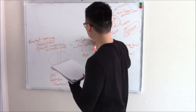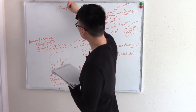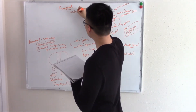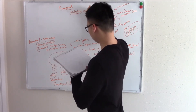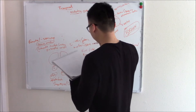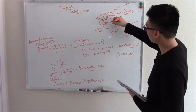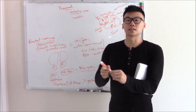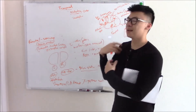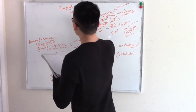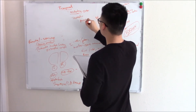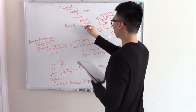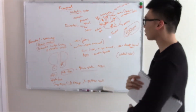Next up is the temporal lobe. The temporal lobe is where you integrate sound — your auditory center. There's a special area called Wernicke's area that helps you process speech, so you can understand what someone is saying. Last but not least, the occipital lobe is your visual center — it helps you integrate visual input.